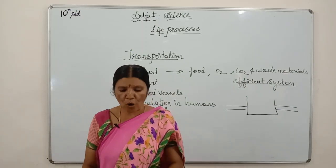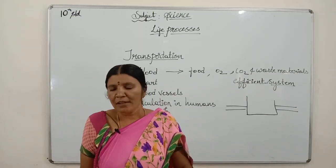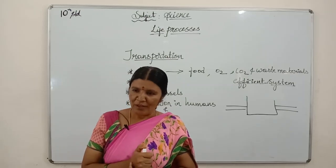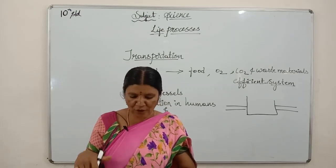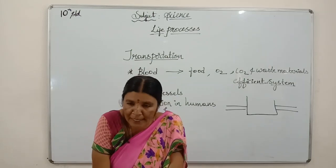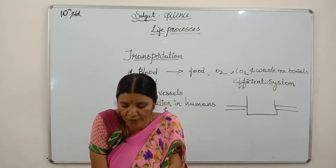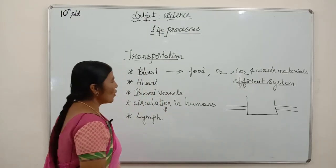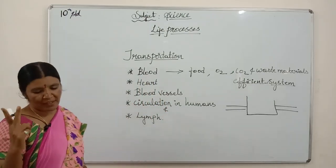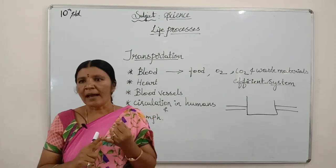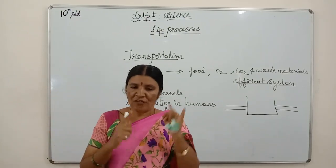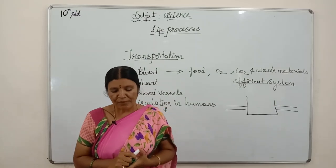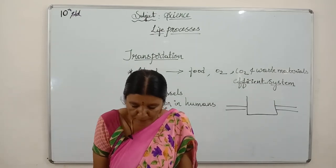What is blood? What is it made up of? Blood consists of two things: plasma and blood cells. The first one is plasma, and secondly it contains blood cells. 55% of our blood is plasma and 45% is blood cells.